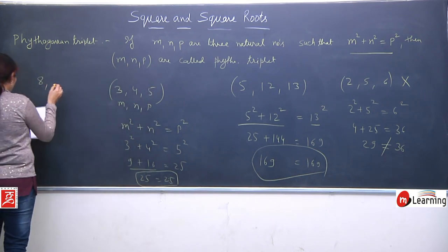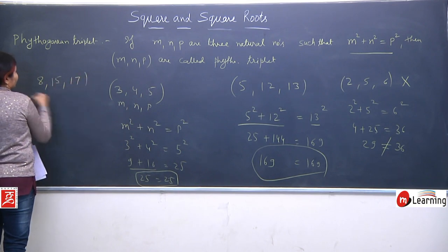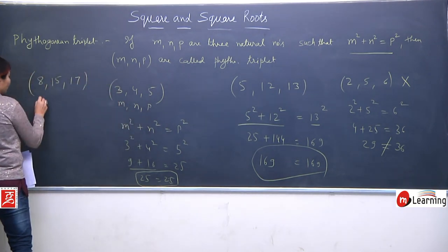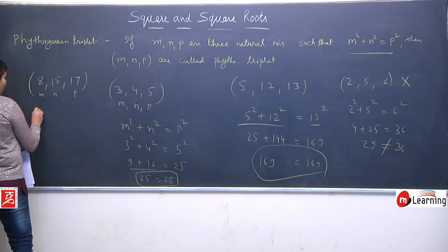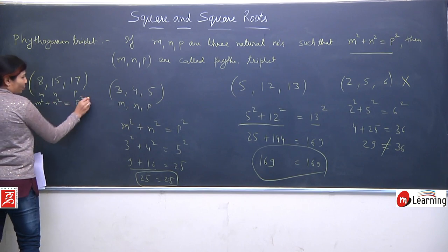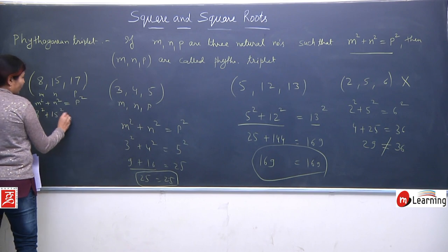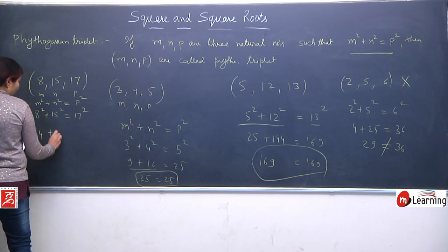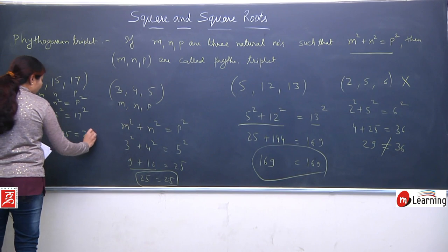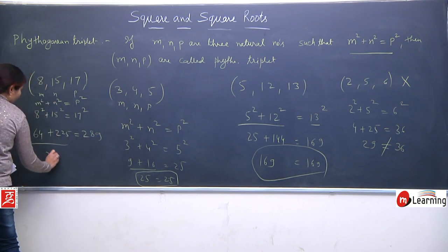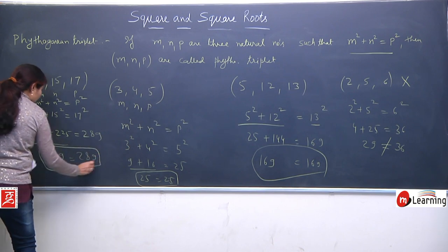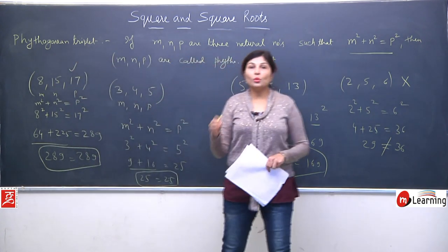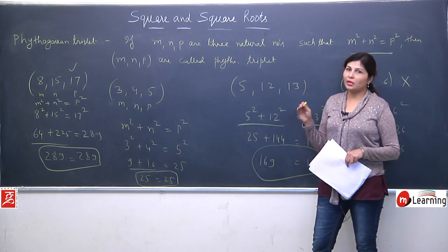Ek aur combination lete hain — a bigger one: 8, 15, and 17. Check whether this is a Pythagorean triplet or not. We will apply the condition: M² + N² = P². So 8² + 15² should equal 17². 8² is 64, 15² is 225, and 17² is 289. 64 + 225 = 289, so LHS equals RHS. This is a Pythagorean triplet. So this is a very interesting and very important property of square and square root.